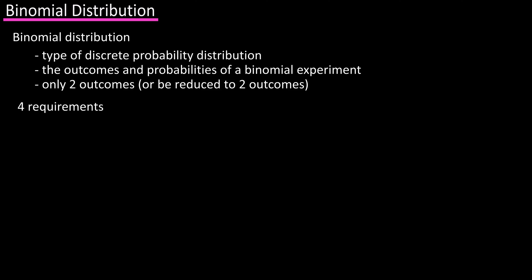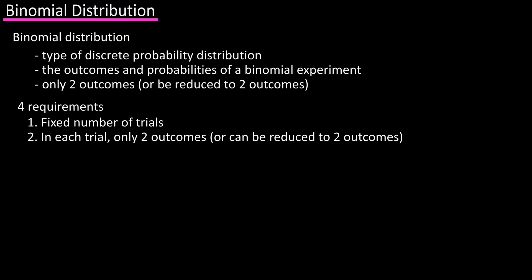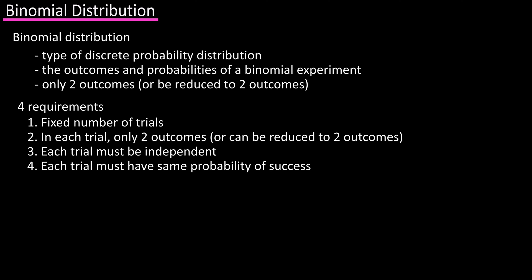There are four requirements for a binomial experiment. Number one is that there must be a fixed number of trials. Number two is that each trial can have only two outcomes, or be reduced to two outcomes, and these are often referred to as a success or a failure. Number three is that the outcomes of each trial must be independent of one another, and number four is that the probability of a success must be the same for each trial.